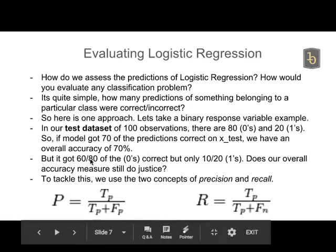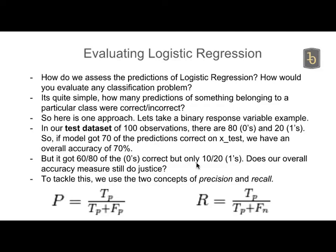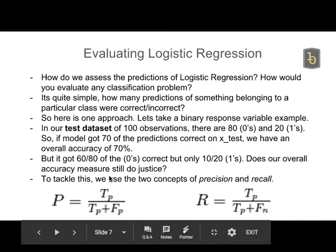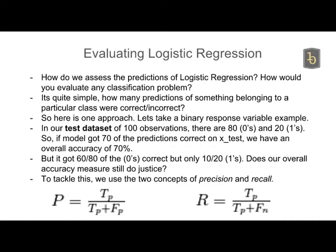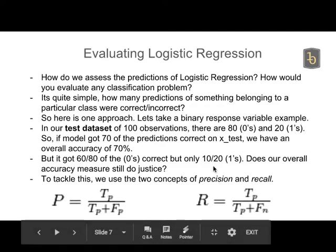I got 60 out of 80 of the not-defaults correct, but only 10 out of 20 for the defaults. My model did well predicting people who did not default — about 75-78% accuracy there — but only 50% accuracy when predicting defaults. Yet overall my accuracy is still 70%. The point is that overall accuracy is not a great measure because of this issue; we have to be more granular.